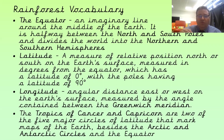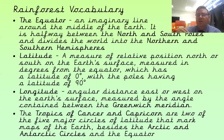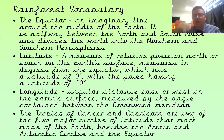The tropics of Cancer and Capricorn are two of the five major circles of latitude that mark maps on the earth. You've got the Arctic Circle, the Antarctic Circle, the equator, and then the tropics. It's between the tropics that our tropical rainforests are found.